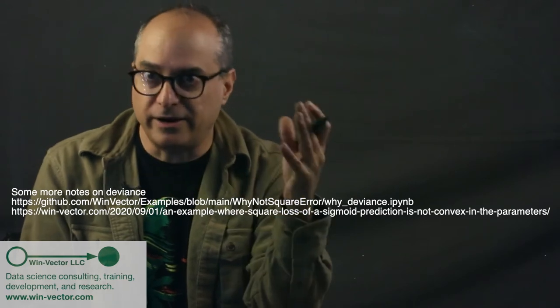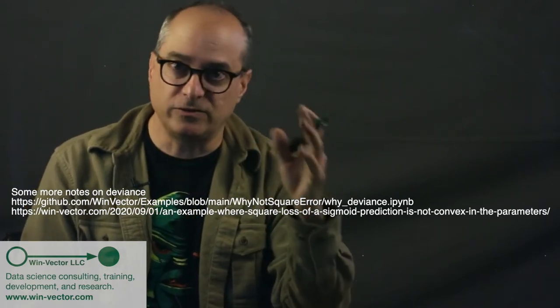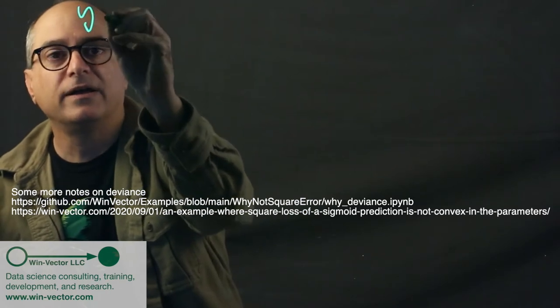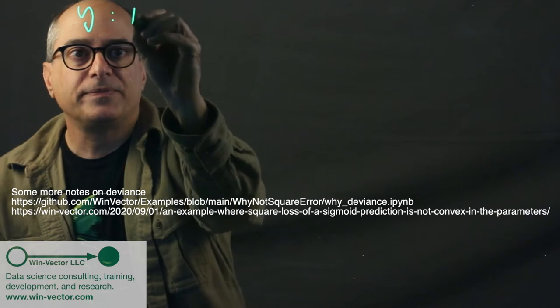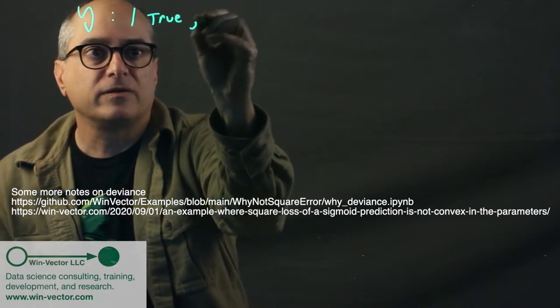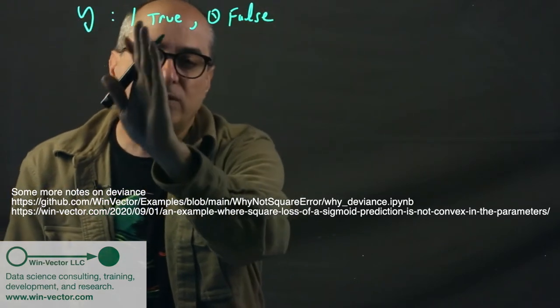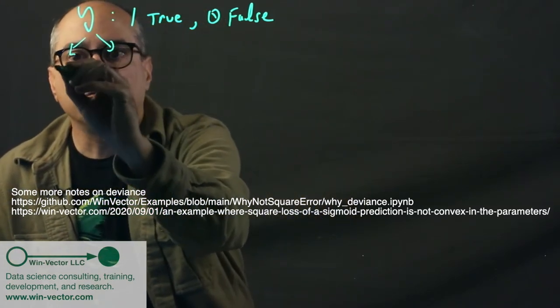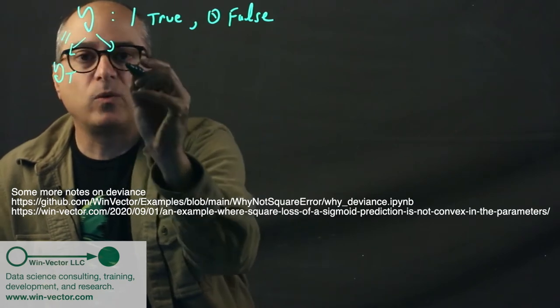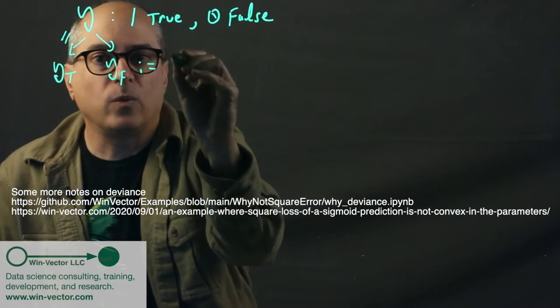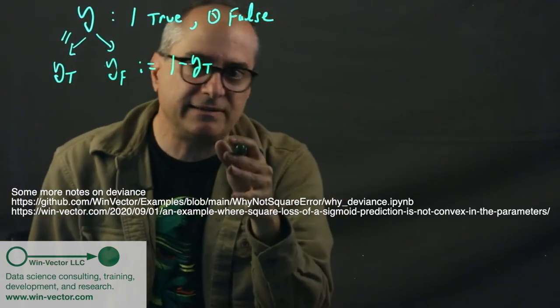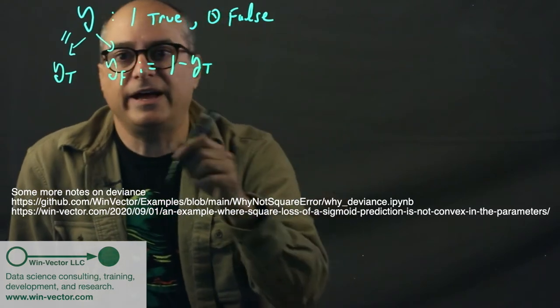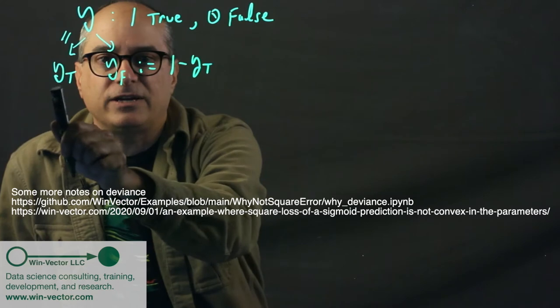So if we solve the problem for a single data row, we've solved it for all. So let's spend some time on a single data row. Let's say this is just a binary classification problem. We're classifying into two classes, true and false. True may mean the person clicked on the ad, false meaning they didn't. We're going to call our dependent variable y. Now y is one for true, zero for false. So we're encoding it as a numeric value, but it can only ever take these two values. So it really is a binomial classification problem. Now we split y into two values, y_true, which is just equal to y, and y_false, which is defined as one minus y_true.